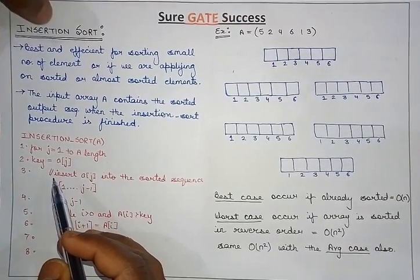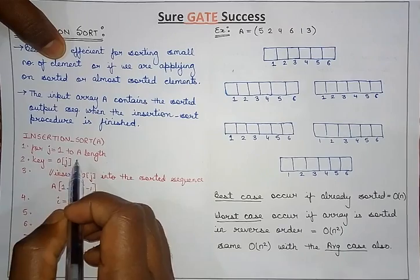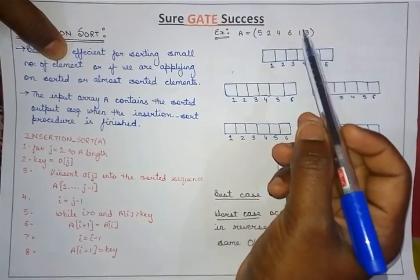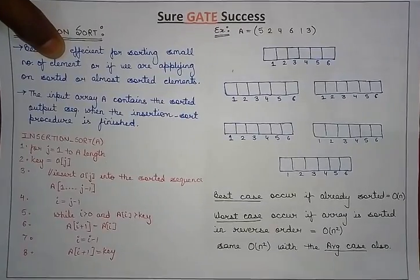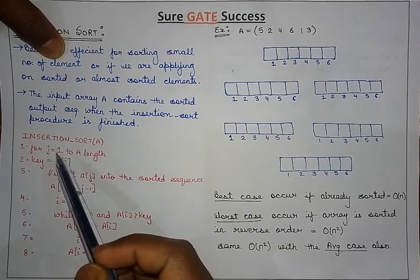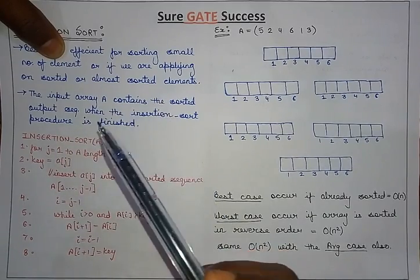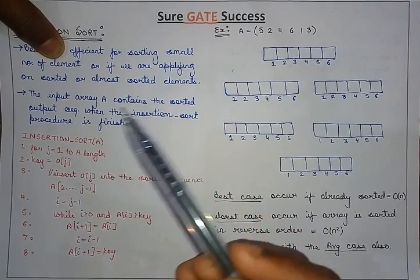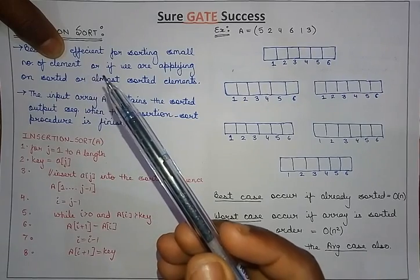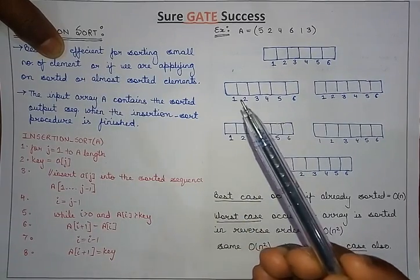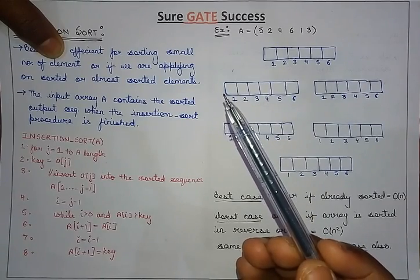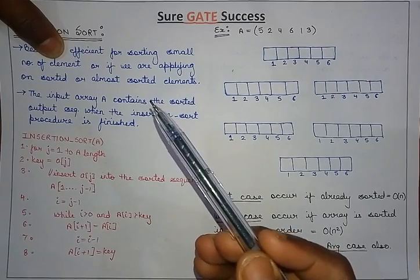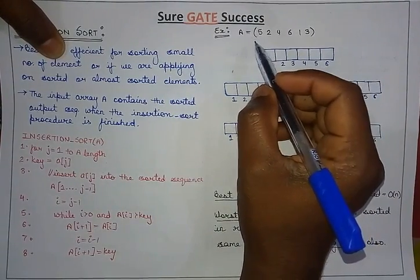Let's understand the algorithm first. In this algorithm we have taken a variable j up to the length of the array. For example, if we have an array of length 6, the value of j will move from 1 to 6. The value of a[j] — that is a[1], a[2], a[3], and so on — will be stored as a key. Then we arrange the value of j iteratively in the array, comparing the next value with the previously inserted values. If the value is smaller than the key, we swap; otherwise we skip.